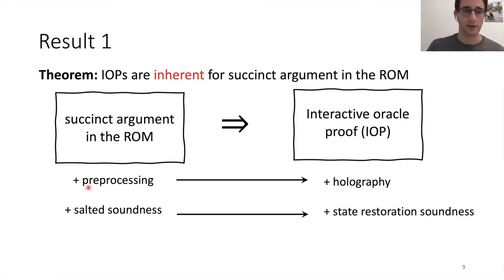A few more terms, mainly aimed for experts. If you start with a pre-processing SNARG, you end up with a holographic IOP. And if you start with a SNARG with a stronger soundness notion that we introduce and called salted soundness, which mainly says that the cheating prover can query some X, get the response Y, and if he doesn't like it, he can ask to resample this response. So if you start with this strong notion, you get the strong notion of state restoration soundness, which is the soundness notion you need when you compile IOP back to SNARKs.